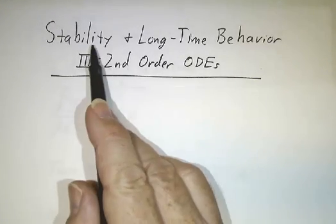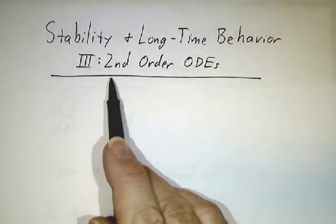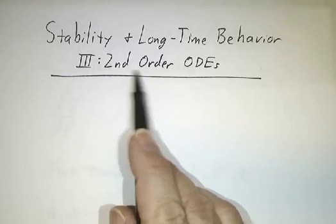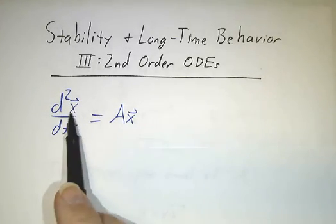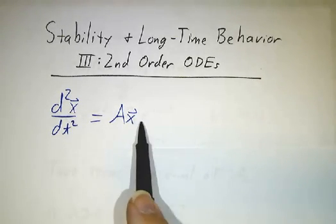We finish off our discussion of stability and long-time behavior by considering what happens with second-order ordinary differential equations. That is, systems that look like the second derivative of a vector is a matrix times the vector.